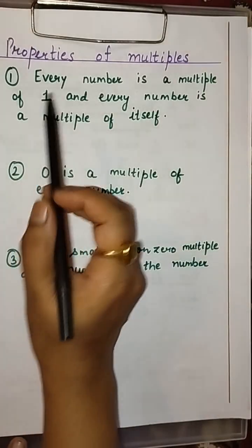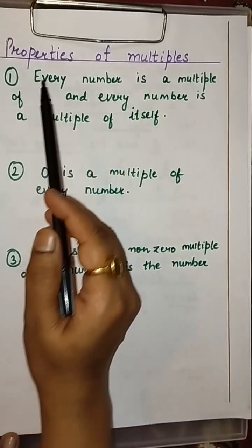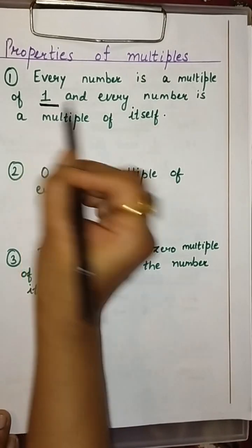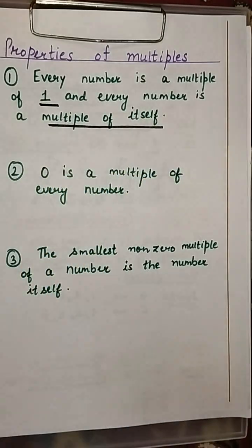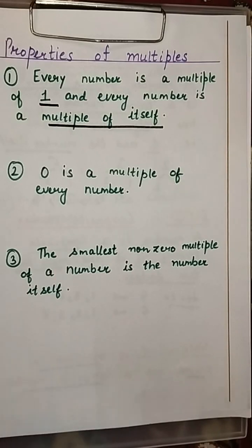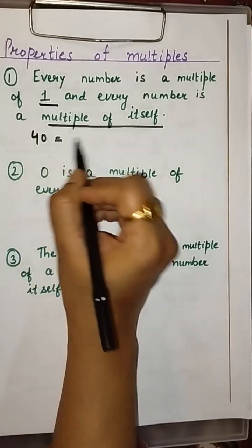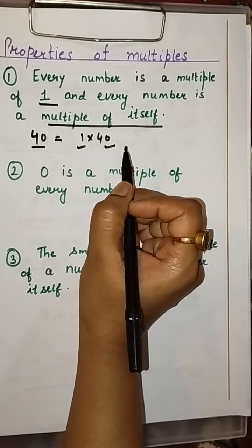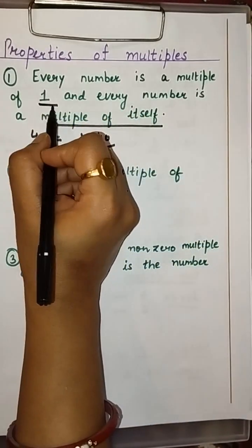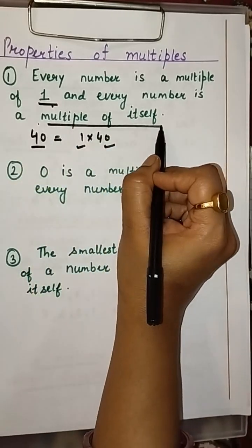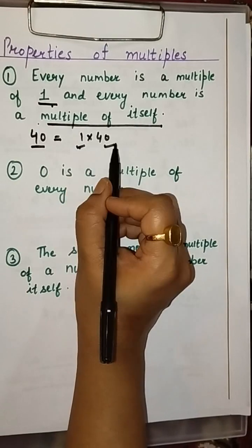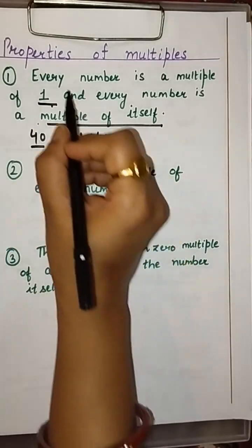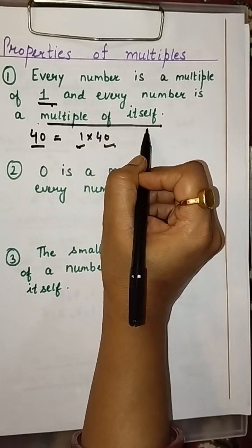Next come the properties of multiples. First property: every number is a multiple of 1, and every number is a multiple of itself. Since every number can be written as a product of 1 and itself — for example, 40 can be written as 1 into 40 — 40 is a multiple of both 1 and 40. This is the first property.